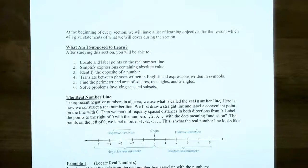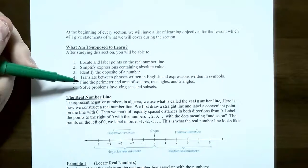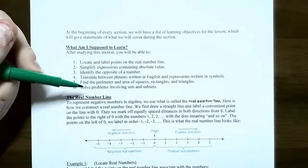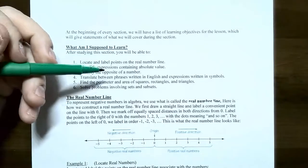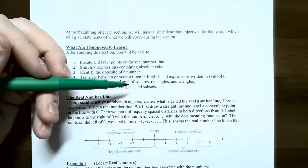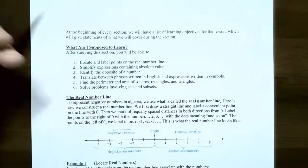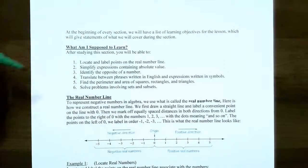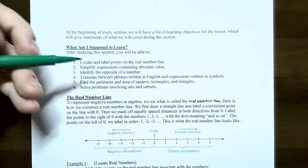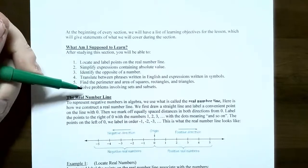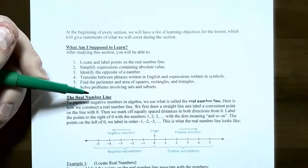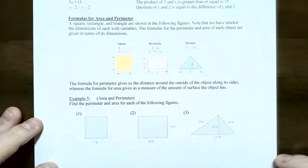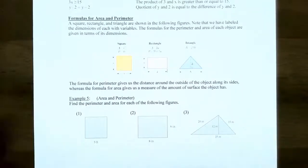In this video we're going to talk about how to find a perimeter and area of very common geometric shapes such as squares, rectangles, and triangles. And then we're going to spend some time on solving problems involving sets and subsets. Let's start with formulas for area and perimeter.